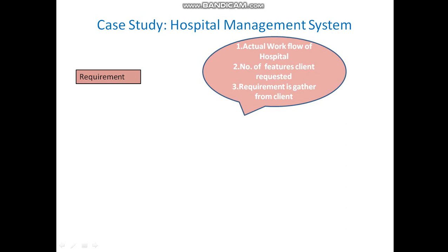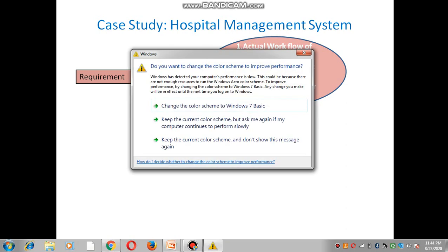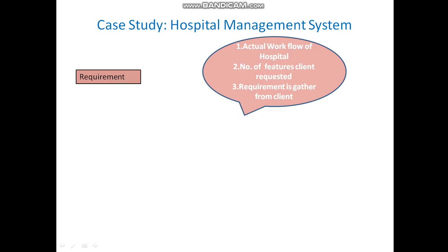This is the automation the hospital wants — only for this process involving these two persons. It is a small system, and there is no requirement to add more users, register doctors through the app, or check availability. The doctor has not demanded those options — only this specific automation. That is why, in this situation, the waterfall model is appropriate. In this way, the complete requirements of the hospital are gathered.